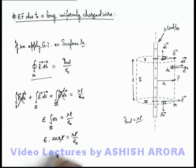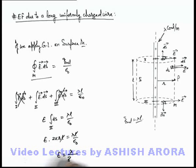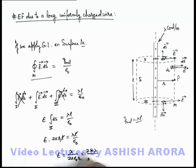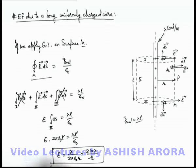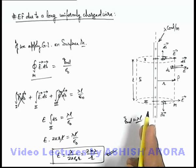Here l cancels out, and the value of the electric field is lambda divided by 2·pi·epsilon-not·r, which can also be written as 2kλ/r. This is the result we already calculated in electrostatics but in a different way, and here we have calculated it using Gauss's theorem.